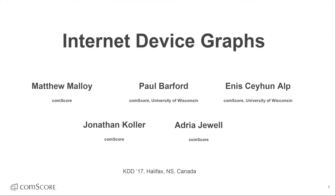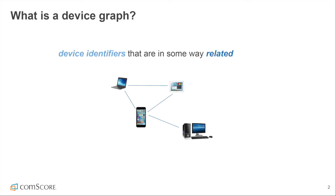Internet device graphs identify relationships between internet-connected devices such as smartphones, tablets, and computers. The starting point for building a device graph is the ability to identify devices. Device identifiers consist of cookies and advertising IDs that are presented by devices as they access resources on the internet.